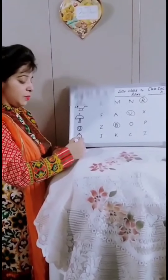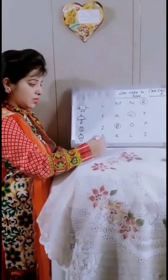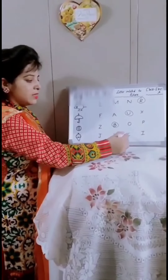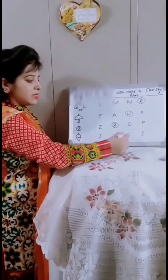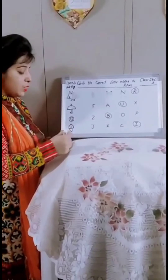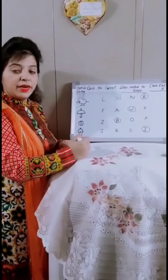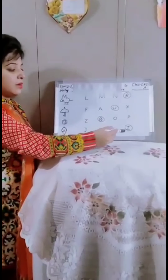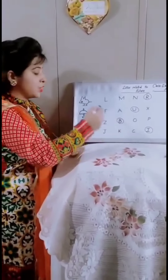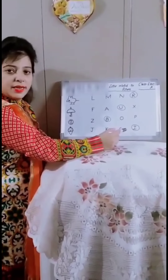Ice cream. I for ice cream. We will circle it. I for ice cream. First of all we will listen the sound, and then we recognize the correct letter. First of all look at the picture, then circle the correct letter.